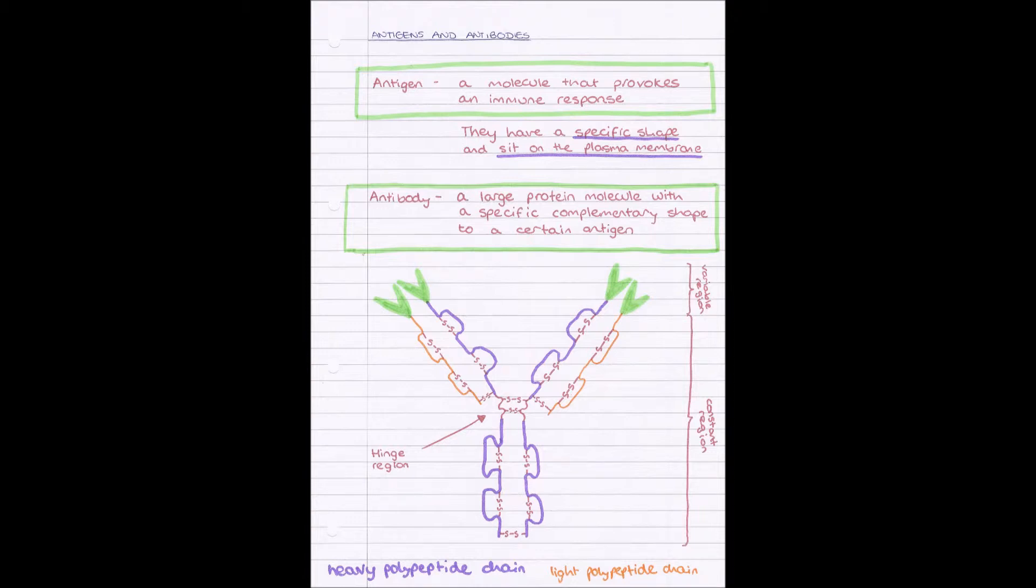If you think about the antigen sitting on the plasma membrane of our pathogen, of our bacteria, the antibody will have the complementary, so reverse inside-out shape to that antigen. In this case, we've got our green hand things and they are forming clippers almost, as it were.